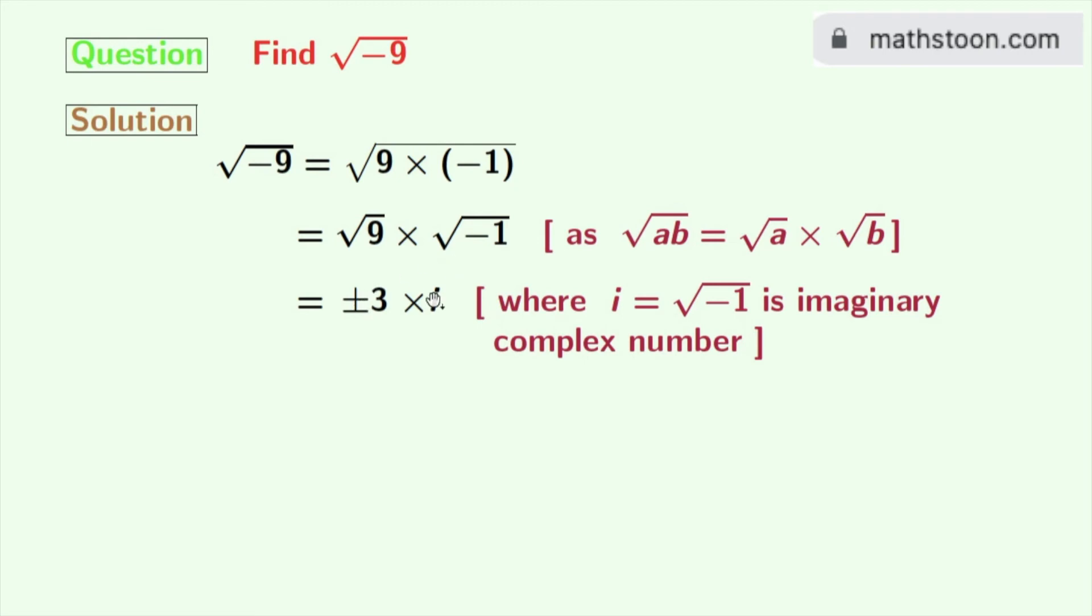Now after multiplying this we get plus minus 3i. So finally we get square root of minus 9 is equal to either 3i or minus 3i.